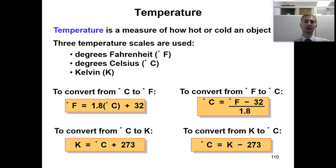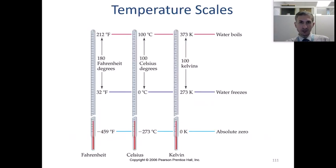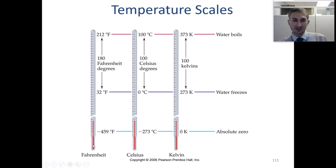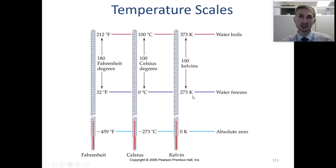It depends on the textbook you are working with — it may be slightly different. For our class, I may use 273.15. In a quick review of the temperature scales, the melting or freezing point of water is 0 degrees Celsius, 32 degrees Fahrenheit, and 273 K.